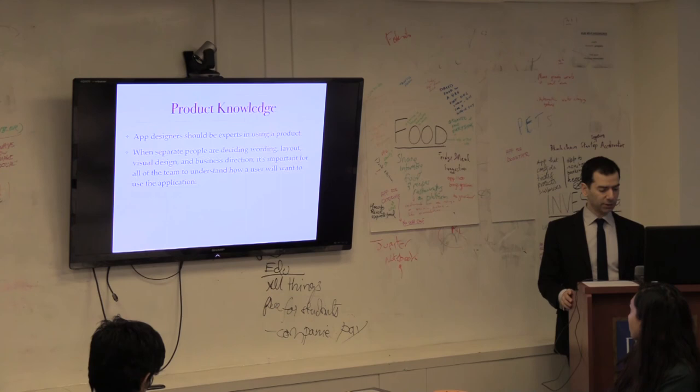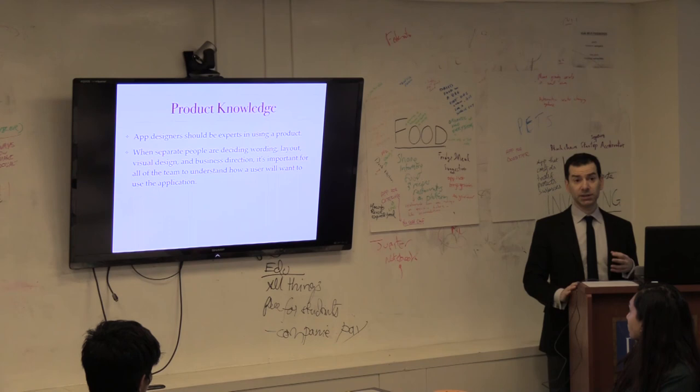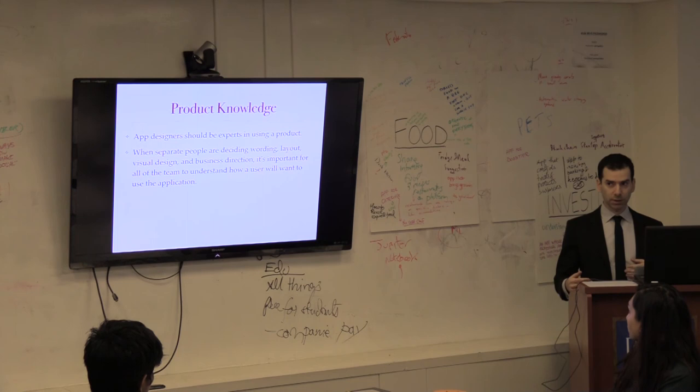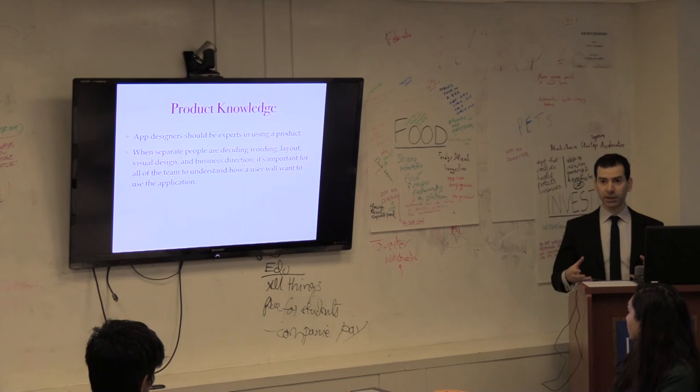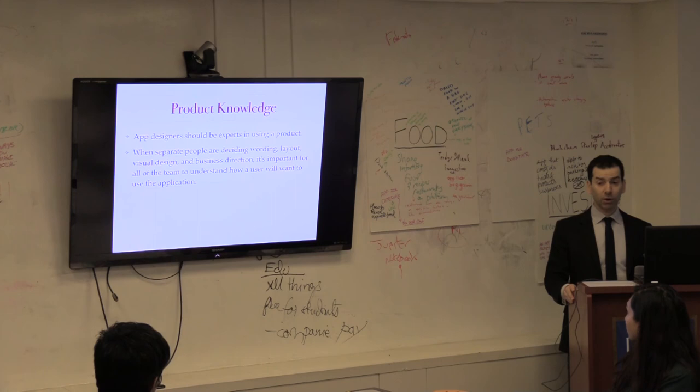And when you're designing an app, I think it's really important for the designers to be experts in that product. Sometimes when you have a design team that's spread amongst lots of different functions, and you have a separate person for the business direction and for the design of the page, for the visual design, and for the wording, you have like a technical writer for the wording. Sometimes the design direction gets lost a little bit. And I think it's important for all the designers, the whole team, to be experts in using the product to prevent that.